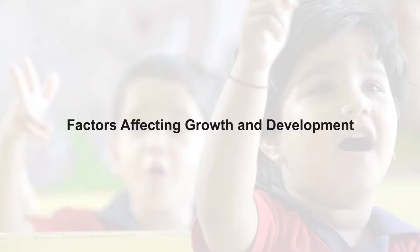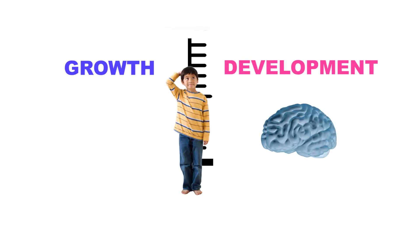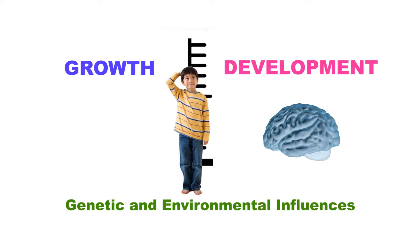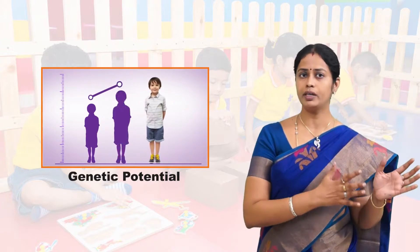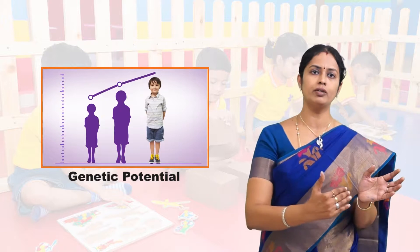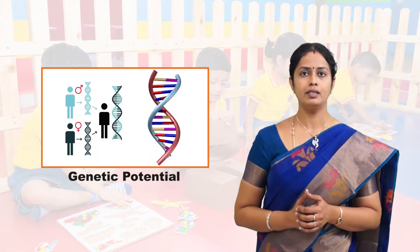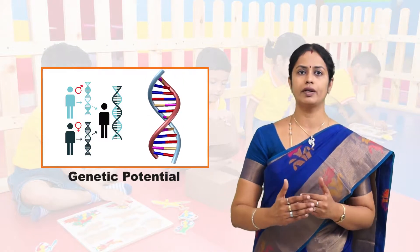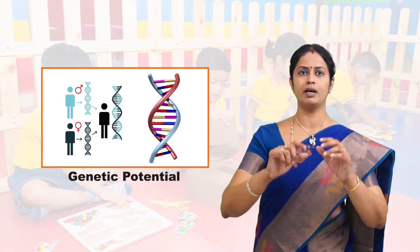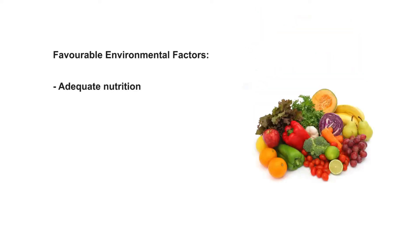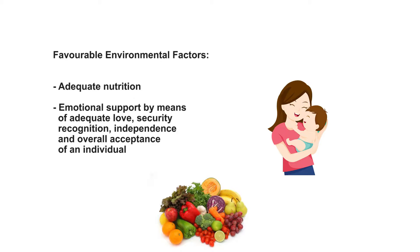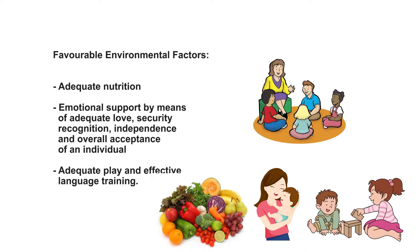Let us now look at the factors that affect growth and development in a human being. Growth and development depend on two major factors: genetic and environmental influences, what we call nature and nurture. Though the potential and limitations of a child's growth and development are determined by genetic factors, the environment aids in achieving that genetic potential. Genetic factors are beyond alteration, but environmental factors can be minimized or maximized in tune with genetic potential. Some favorable environmental factors are adequate nutrition, emotional support through adequate love, security, recognition, independence and overall acceptance, adequate play, and effective language training.